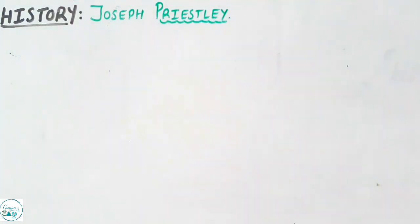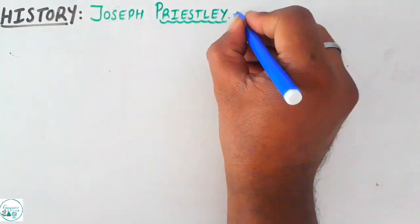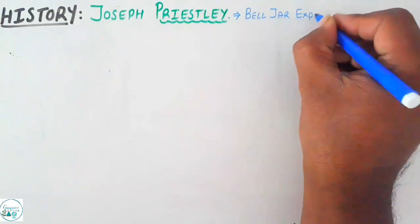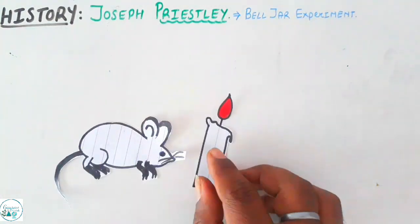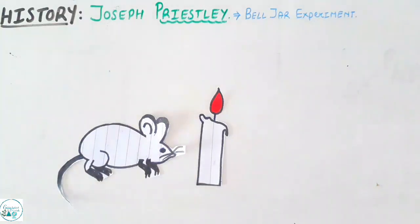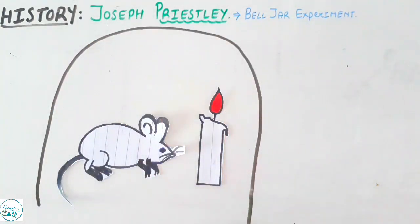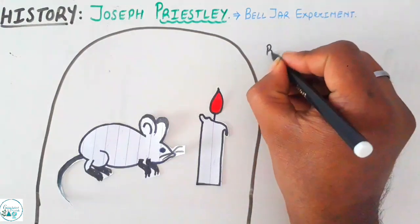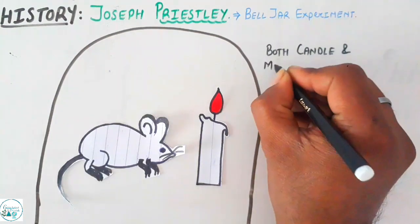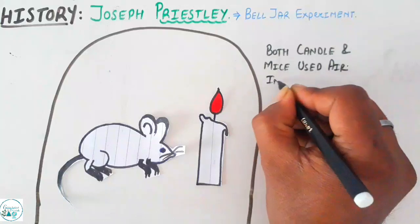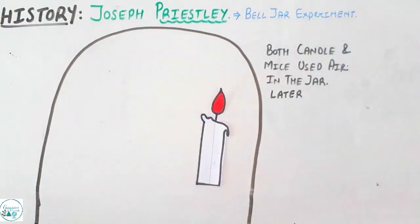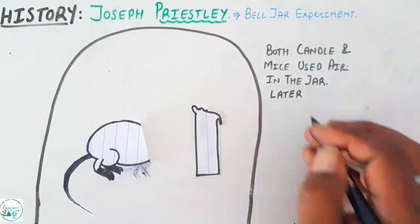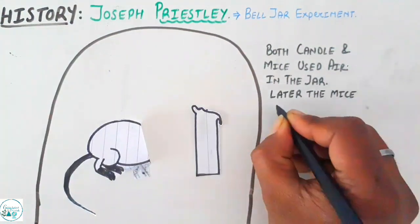The first person that we are going to talk about is Joseph Priestley, and he conducted a very simple experiment which was referred to as the bell jar experiment. The experiment included placing a mice and a candle in an inverted bell jar, and it was found that both the candle and the mice used up the air which was present inside the jar.